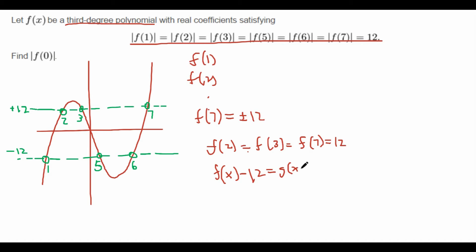Well, clearly g(x) is also degree 3 because we're just subtracting a constant. And in addition, if we plug in x equals 2, 3, or 7, then we get that g(x) is equal to 12 - 12, which is 0. So that means g(x) has roots of 2, 3, and 7. So that's pretty useful because since g(x) is a third degree polynomial and we know all three of its roots, we can basically tell what this polynomial is now.